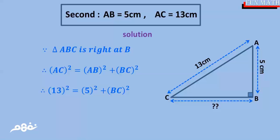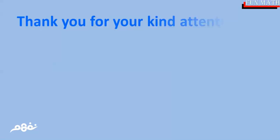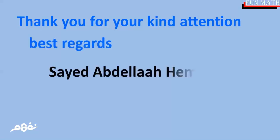By subtracting 25 from both sides, BC squared equals 169 minus 25, which equals 144. By taking the square root of both sides, we get BC equals 12 centimeters. Now we are reaching the end of our lesson. Thank you and goodbye.